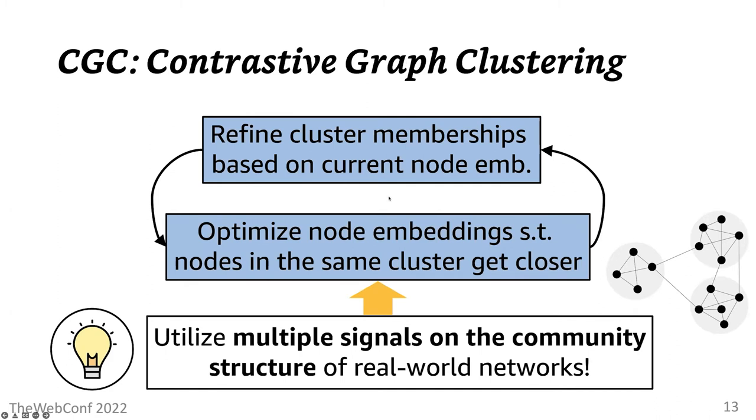In CGC, therefore, contrastive learning happens in this second step, where positive samples of a node are assumed to have been generated by the same cluster as the node of interest, the anchor node. And to that end, we utilize several signals on the community structure of the network obtained from different levels of the input data.